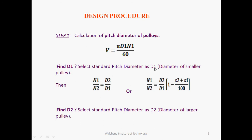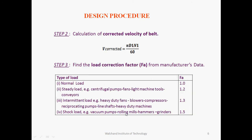Once d1 is fixed, we can calculate d2 using the equation n1/n2 = d2/d1. This is without considering slip, but at high belt speeds, slip may occur at both the smaller and larger pulleys. The maximum total slip is around 2 to 3 percent. Considering the slip of the belt over the pulleys, we calculate d2, then set both d1 and d2 to standard values from the manufacturer's catalog.